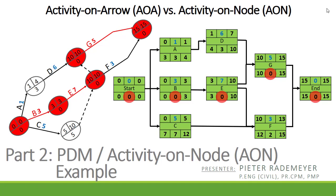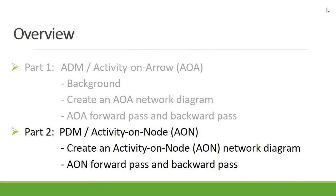This video is part 2 of a two-part series where we will be creating an Activity on Node network diagram, using the same example from part 1 where we developed the Activity on Arrow network diagram. In part 1 we did the background of Activity on Arrow, created the network diagram, and did the forward and backward path. In this video we will create the Activity on Node network diagram and do the forward and backward path.